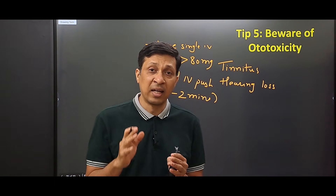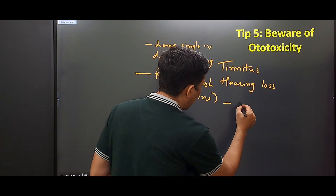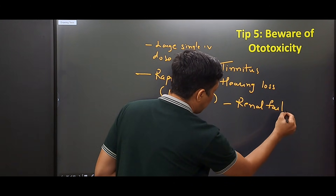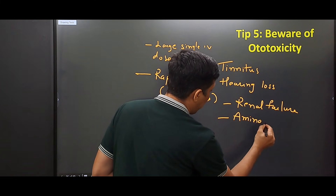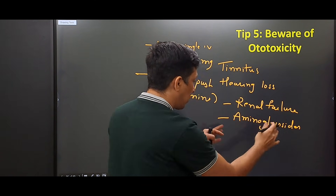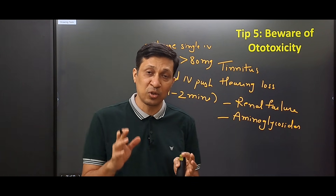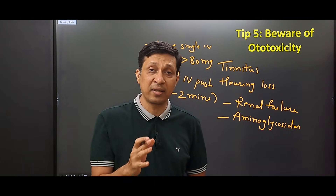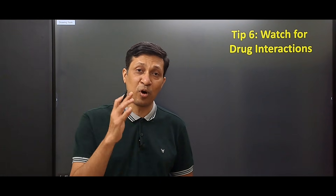In certain conditions the risk of ototoxicity increases further — for example in a patient with renal failure. The chance is also higher in patients who are on aminoglycosides, which are a group of antibiotics that are themselves ototoxic. So whenever a patient is on aminoglycosides and you add furosemide, the risk of ototoxicity increases significantly.